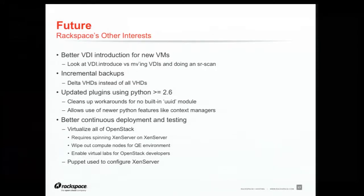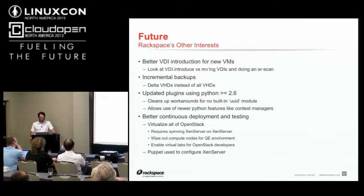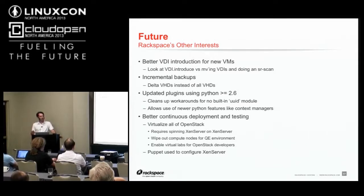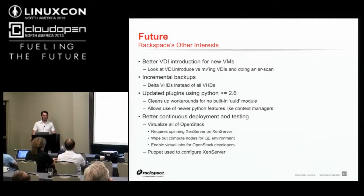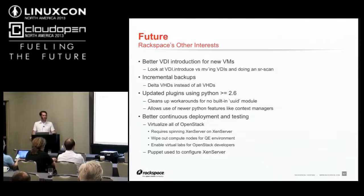VDI introduction for new VMs is something we noticed as well — instead of doing a full SR scan, we can just indicate the VDI is there. We're on Xen Server 6.2 and have been experimenting with moving toward just an OS, taking packaging from the Xen project and building on top of that. With the foundation coming out, we're finally at a good time to move forward in the open, rather than figuring it out by ourselves. We've been working with the OpenStack and Citrix teams to virtualize the OpenStack experience and push testing from inside company walls out to the open, so real-world heavy-load use cases get tested before they slip downstream.